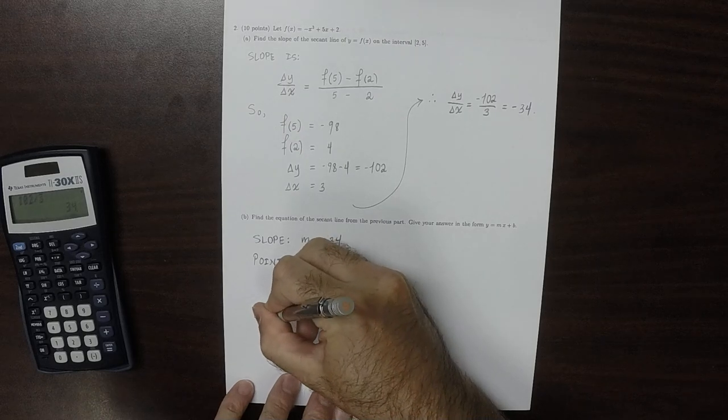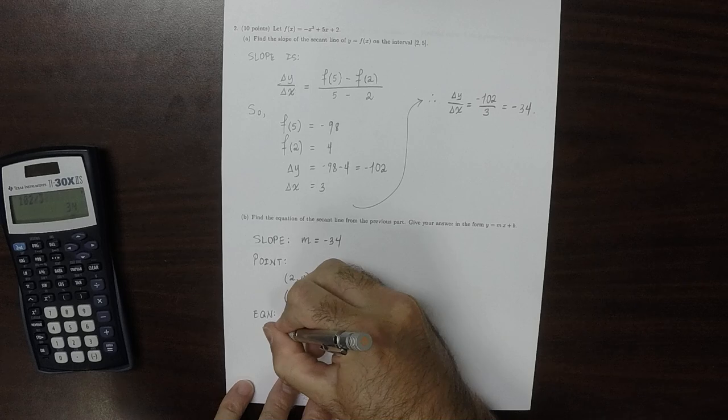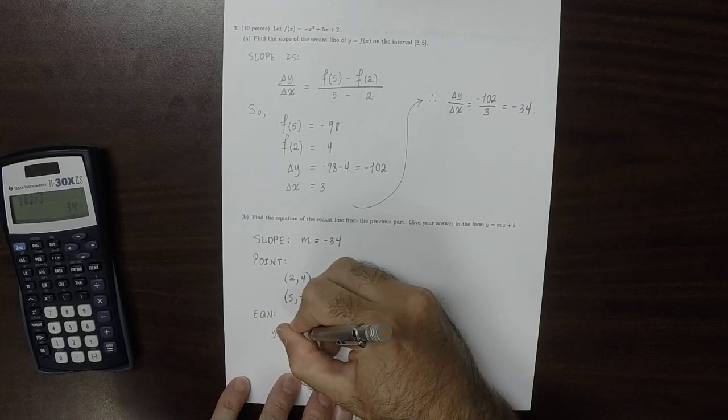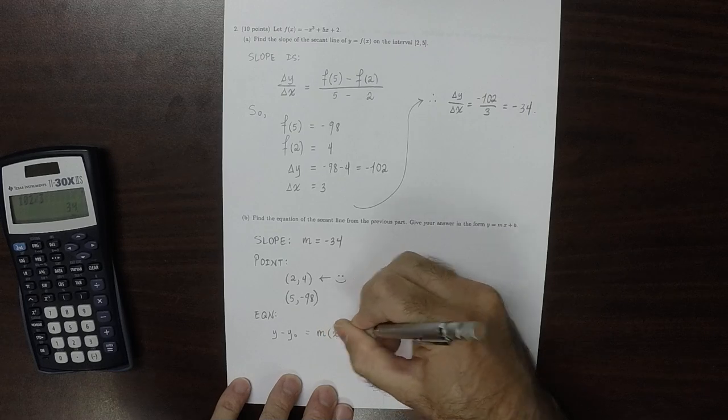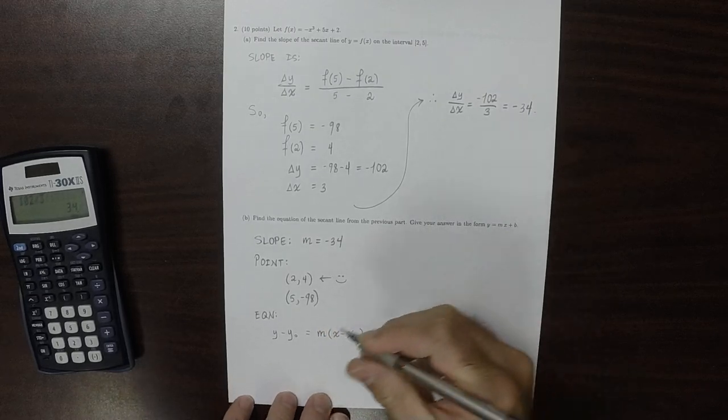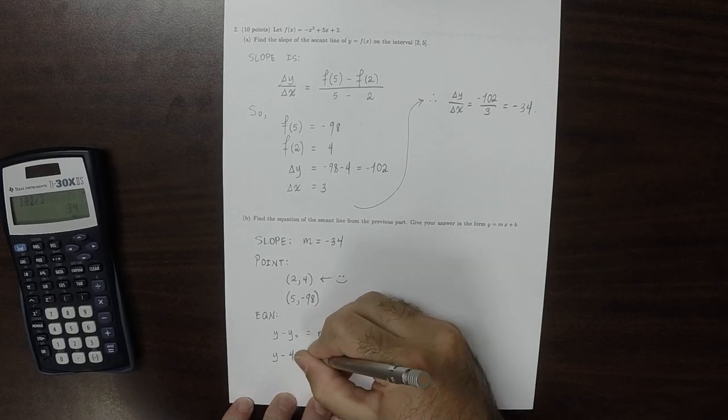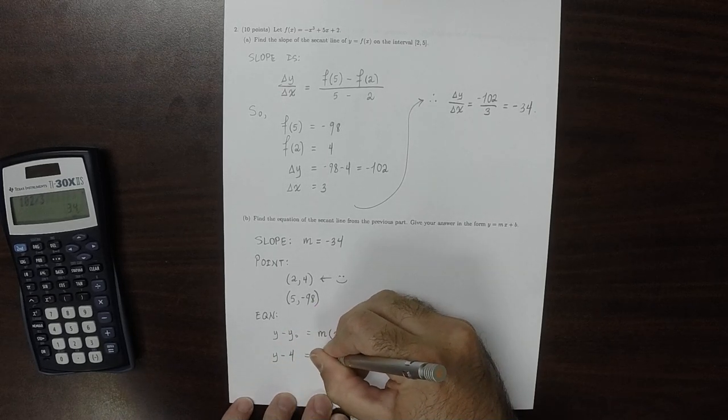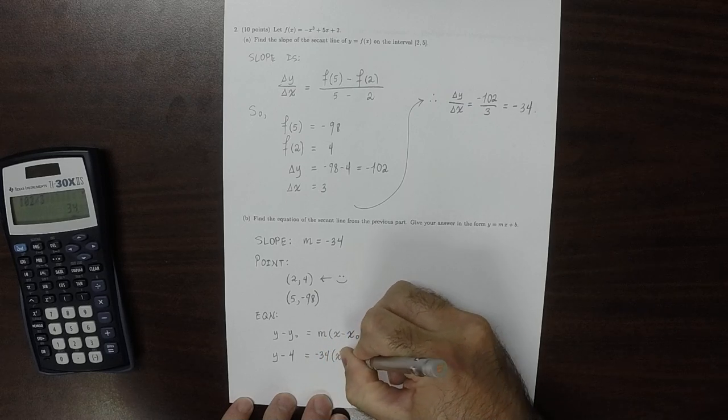The equation then is y minus y0 is mx minus x0, and we just plug in all the bits. So y minus 4 is negative 34 times x minus 2.